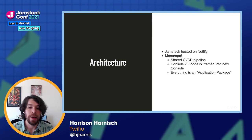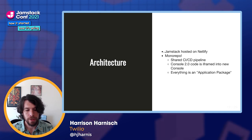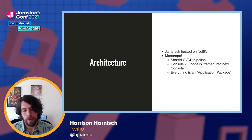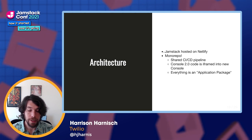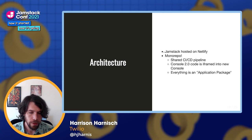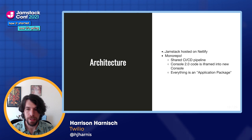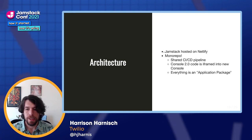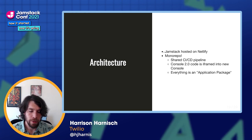What teams are migrating towards is something we're calling application packages. These are basically code-split JavaScript bundles that are asynchronously loaded with Suspense and wrapped in error boundaries. This allows us to isolate applications from different teams from one another, so if one team rolls a bad code change, it's not going to take down the whole console — just that one part of the application.